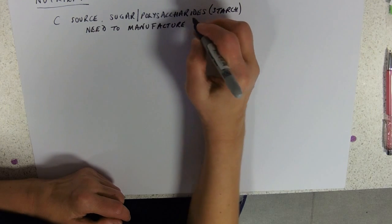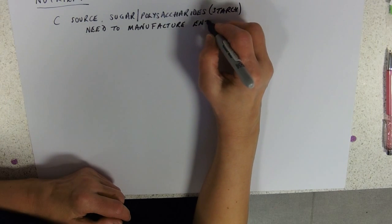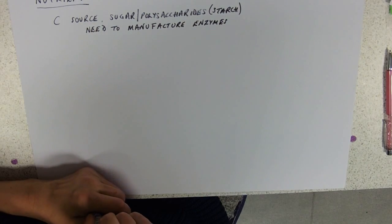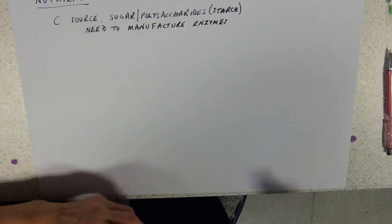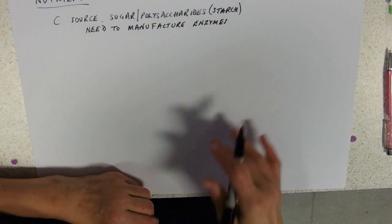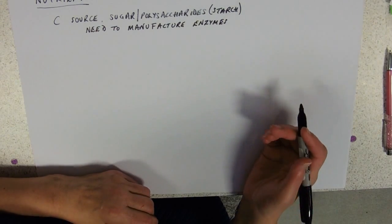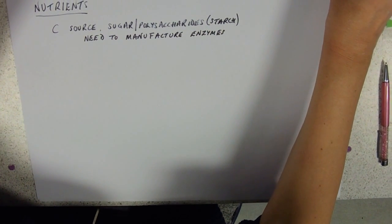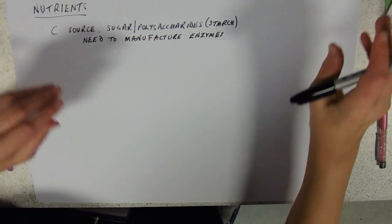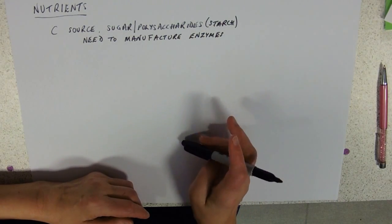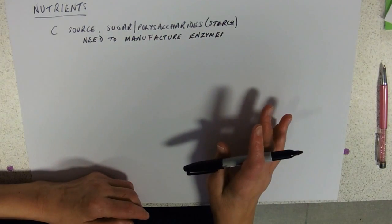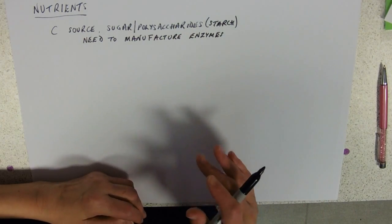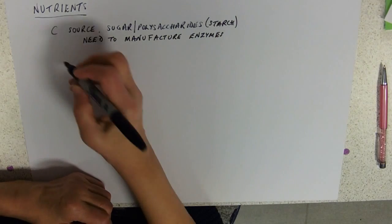If you grow organisms on maltose, then they're going to need maltase to break it down into glucose so that they can use it. If you grow them on glucose, they're not going to need to do that. If you're looking at lactose, that's not a very common sugar in the environment because it's found in breast milk. So the organism might need to actually stop and do some enzyme synthesis before it could actually use it.